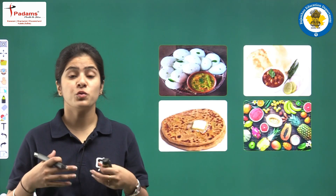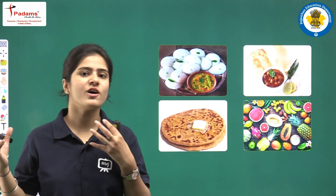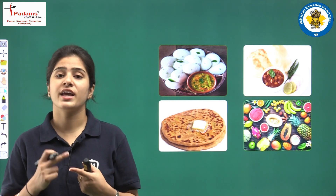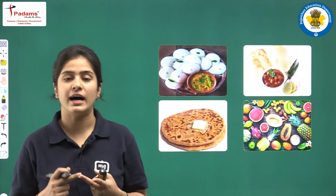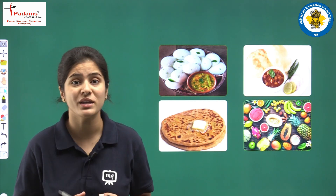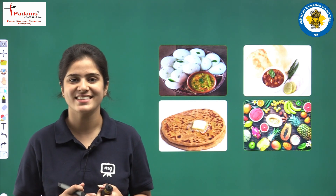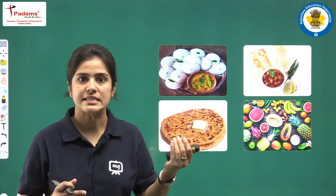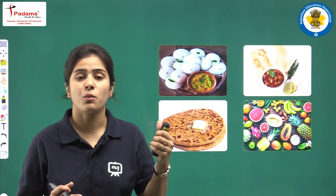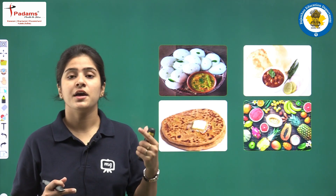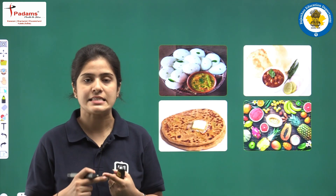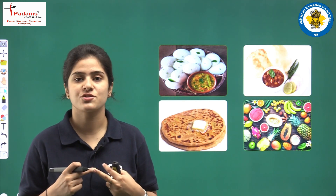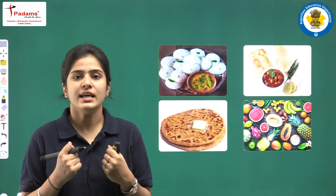When I talk about food items, a lot of variety comes into my mind — Chole Bhature, Idli Sambar, Vada Pav, Aloo Paratha, ice cream and so many things. What do I drink or eat in summers? We eat watermelon, muskmelon, we drink lemonade, lassi, chhach, juices like orange juice, etc. That keeps my body hydrated.